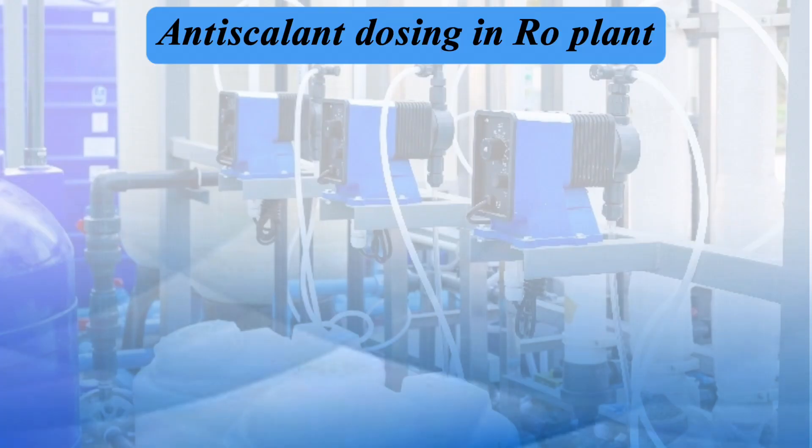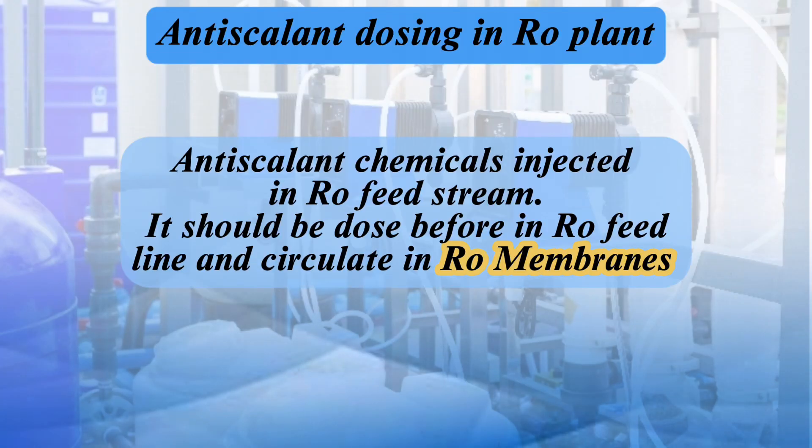How to apply antiscalant. Antiscalant is typically injected into the feed water stream upstream of the RO membranes. It can be injected using a metering pump or a static mixer. The antiscalant is added to the feed water and circulated through the system before the water reaches the reverse osmosis membrane.